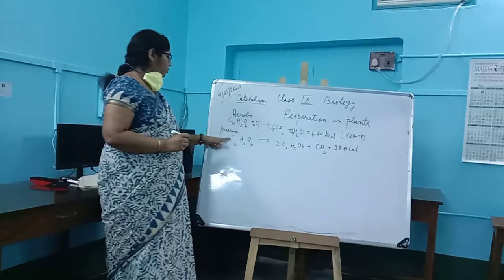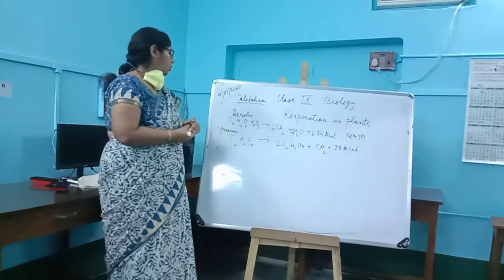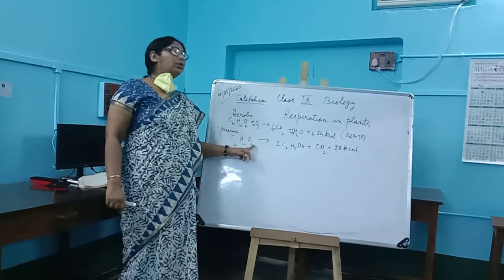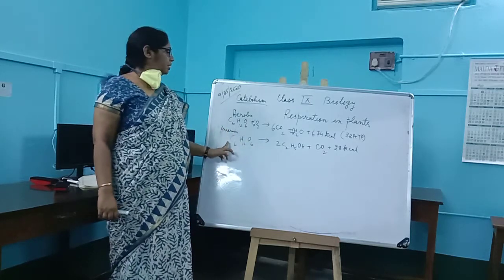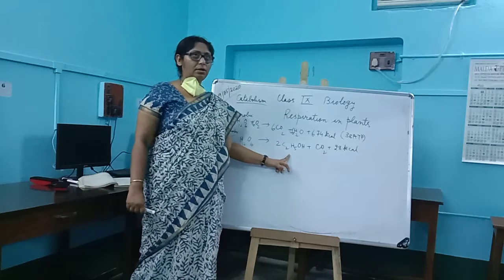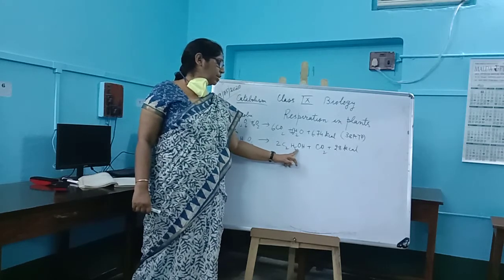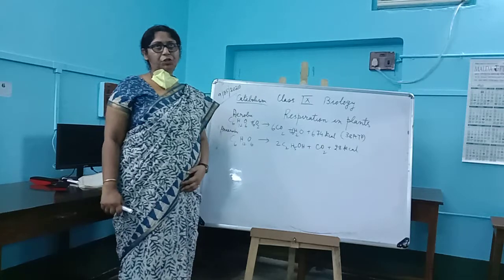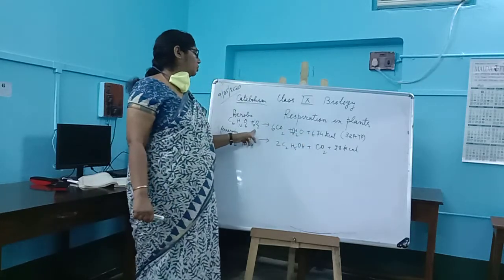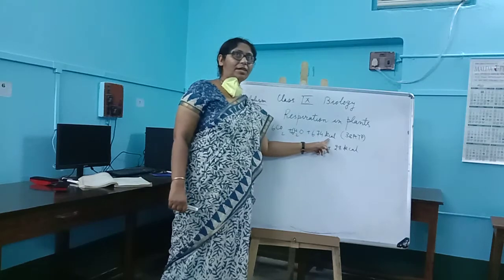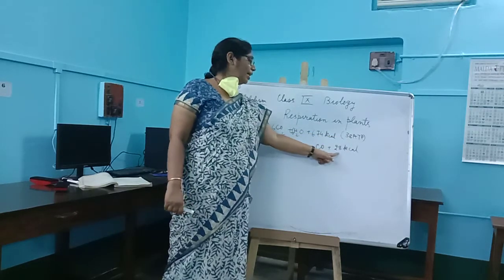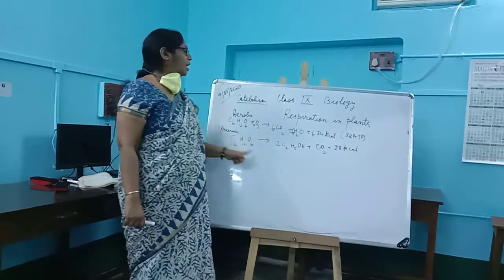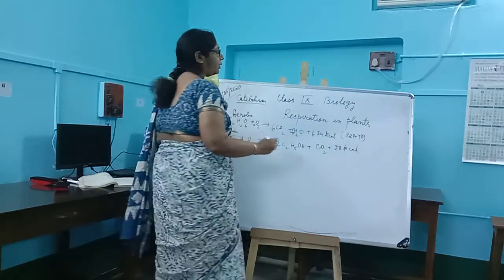In anaerobic respiration, C6H12O6 (glucose) does not combine with oxygen. From this you are getting ethyl alcohol (C2H5OH) and carbon dioxide, and a lesser amount of energy is formed. In aerobic respiration, 674 kilocalories equivalent to 38 ATP are produced. In anaerobic respiration, less energy is produced — equivalent to 2 ATP.